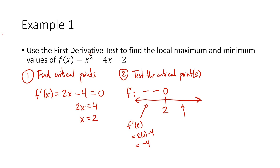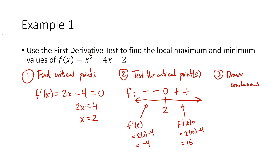Now I choose a number greater than two — how about 10? So f prime of 10 — again, plugging into the derivative — gives two times 10 minus four, that's 20 minus four, that's 16. All I really care about is that 16 is positive, so I put little plus signs. My third step is to draw conclusions: at x equals two, my slope changed from negative to positive, meaning my function was going down and then started going back up.